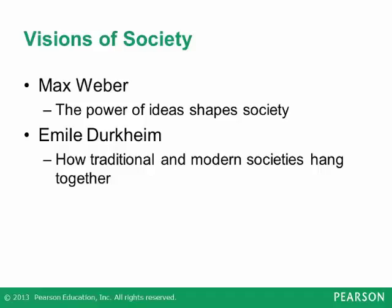Karl Marx, like Lensky, took a historical view of societies, but Marx's story is all about social conflict that arises as people work within an economic system to produce material goods. Max Weber tells a different story, showing that the power of ideas shapes society. Weber contrasted the traditional thinking of simple societies with the rational thought that dominates complex societies today. Finally, Emile Durkheim helps us see the different ways that traditional and modern societies hang together. All four visions answer questions such as: What makes the Tuareg way of life so different? How and why do societies change? What forces divide or hold a society together?